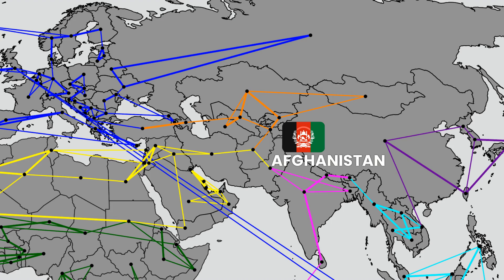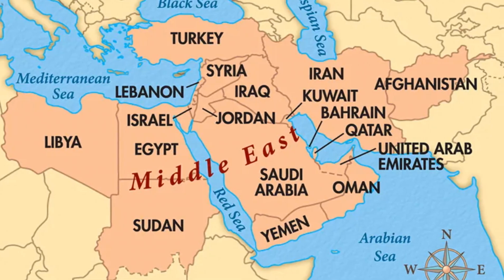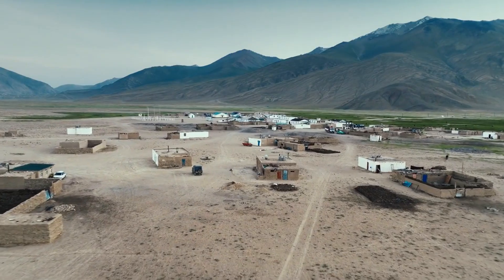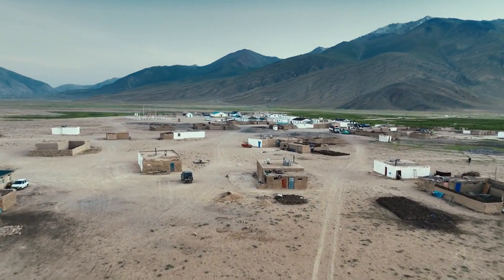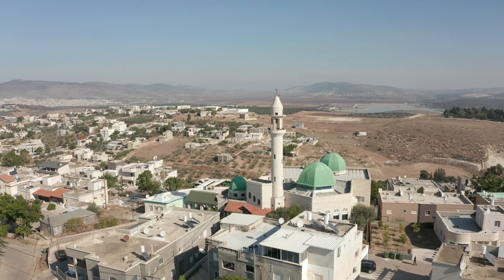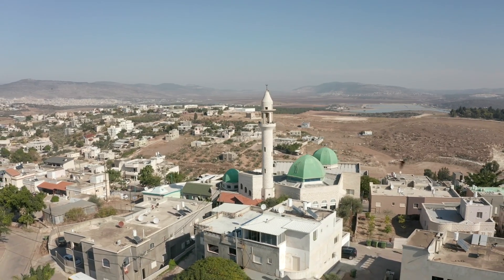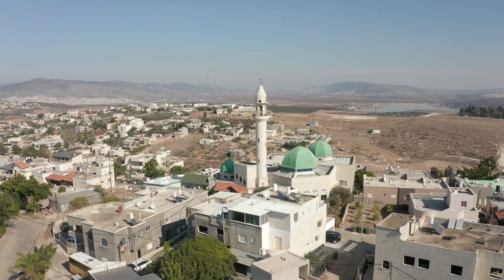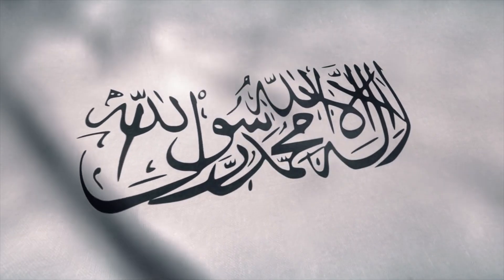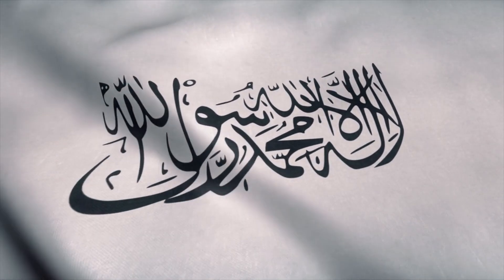Afghanistan has actually been commonly grouped into three different regions of the world in maps created by academics: the Middle East, Central Asia, and even South Asia. Its most similar country, Tajikistan, is undoubtedly a Central Asian country. However, Afghanistan was not part of the Soviet Union, so its laws are far more conservative. Unlike Central Asia, the country still uses the Arabic script like Iran.